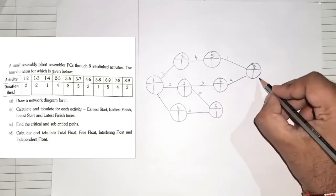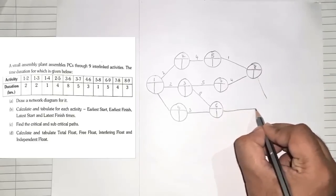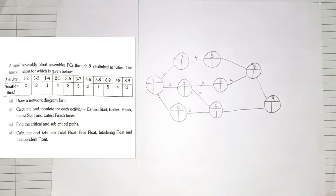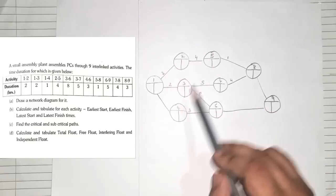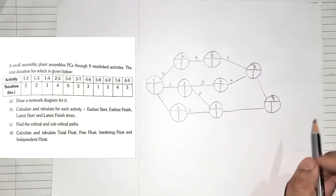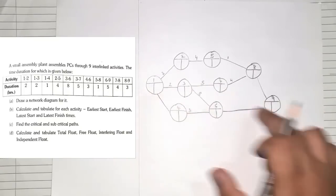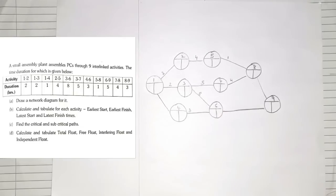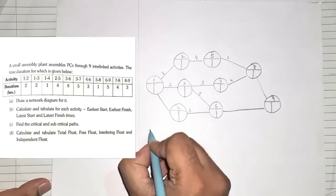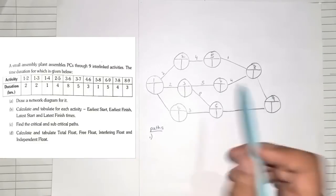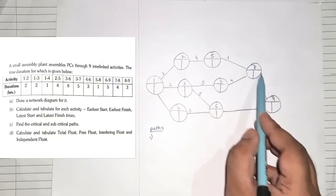The last connections are: from node 6 to node 9, and from node 8 to node 9 — giving us node 9 as the final endpoint. So nodes 1 through 9 form the complete network. This is how the network diagram looks — it starts from one point and ends at one single point. Now we note down all the paths available to find the critical and subcritical path.